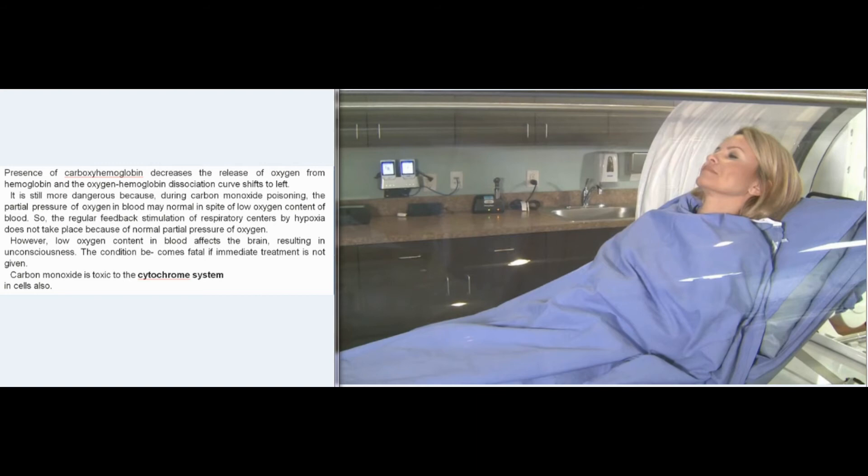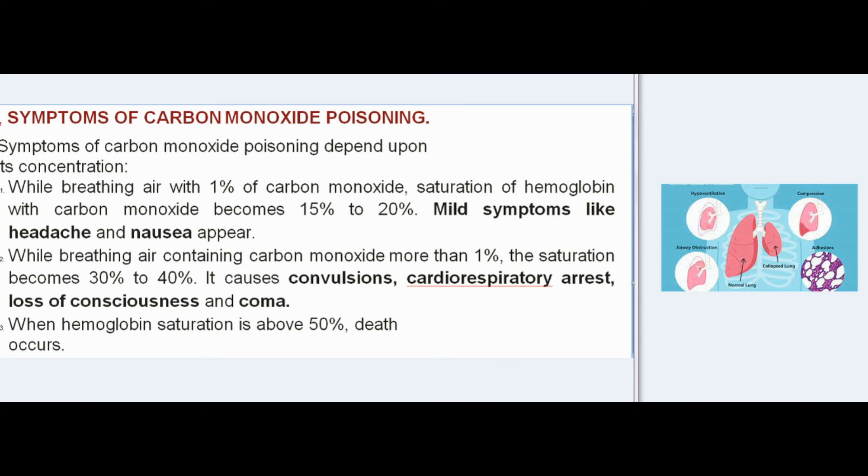Low oxygen content in blood affects the brain, resulting in unconsciousness. The condition becomes fatal if immediate treatment is not given. Carbon monoxide is also toxic to the cytochrome system in cells. Breathing air with 1% carbon monoxide causes saturation of hemoglobin to become 15–20%, producing mild symptoms like headache and nausea. Breathing air containing more than 1% carbon monoxide causes saturation to become 30–40%, causing convulsions, cardiorespiratory arrest, loss of consciousness, and coma. When hemoglobin saturation is above 50%, death occurs.